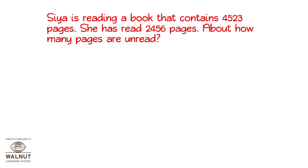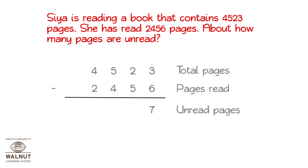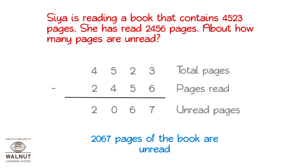Sia is reading a book that contains 4,523 pages. She has read 2,456 pages. About how many pages are unread? We have to find out the unread pages. We know the total pages, and from that we subtract what she has read. What we get are the unread pages. So, we do the subtraction and get the answer. 2,067 pages of the book are unread.